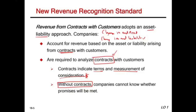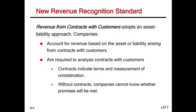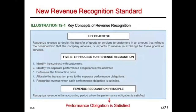The contract identifies rights and obligations. If there is no contract, there is no revenue. The key objective is to recognize revenue to depict the transfer of goods or services to customers in an amount that reflects the consideration the company receives or expects to receive in exchange for those goods or services. We record revenue based on what we are going to receive or expect to receive. There is a five-step process for revenue recognition — that's the new thing.